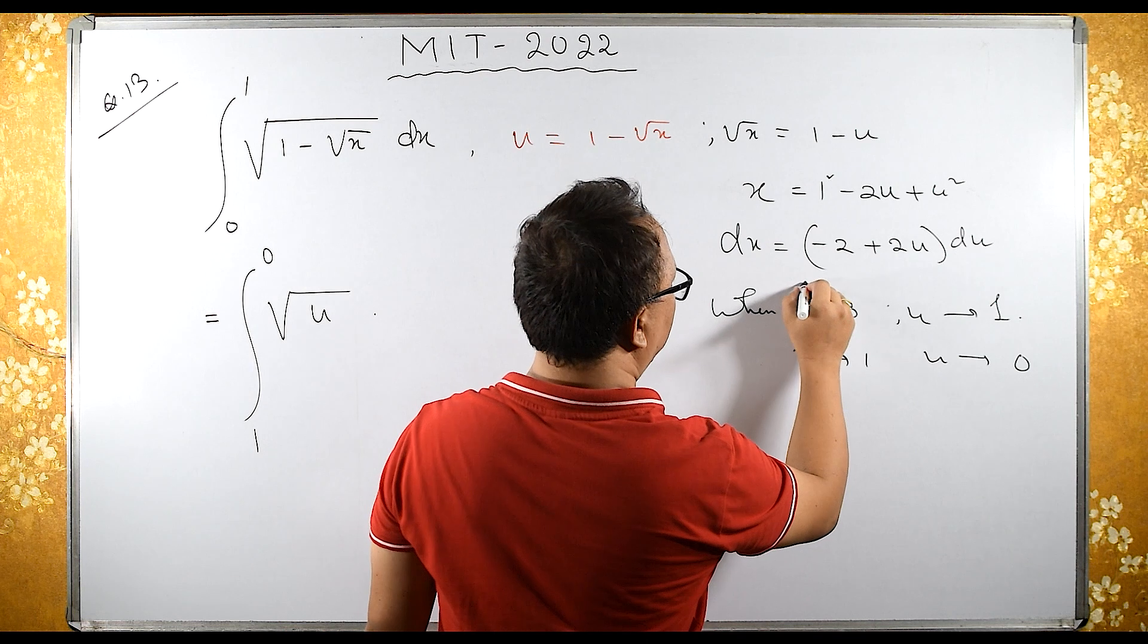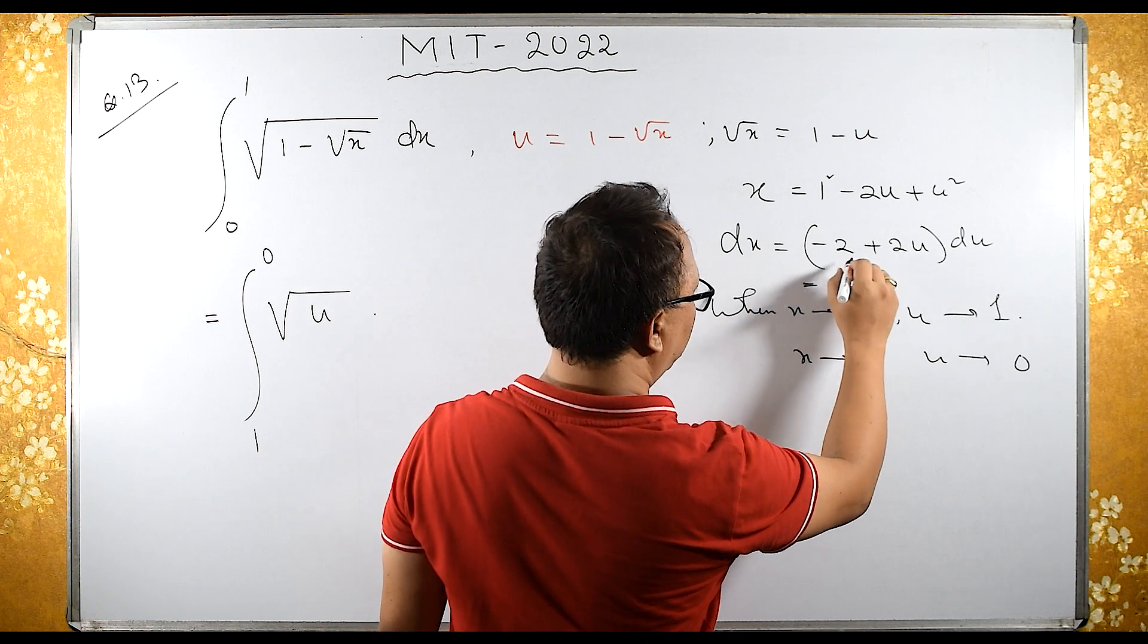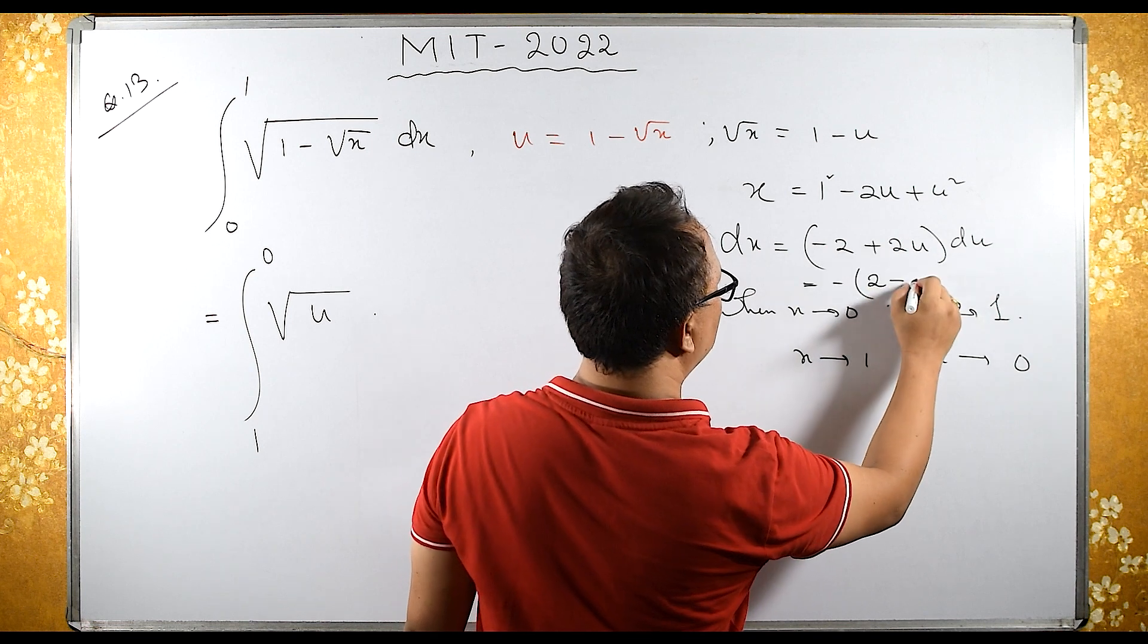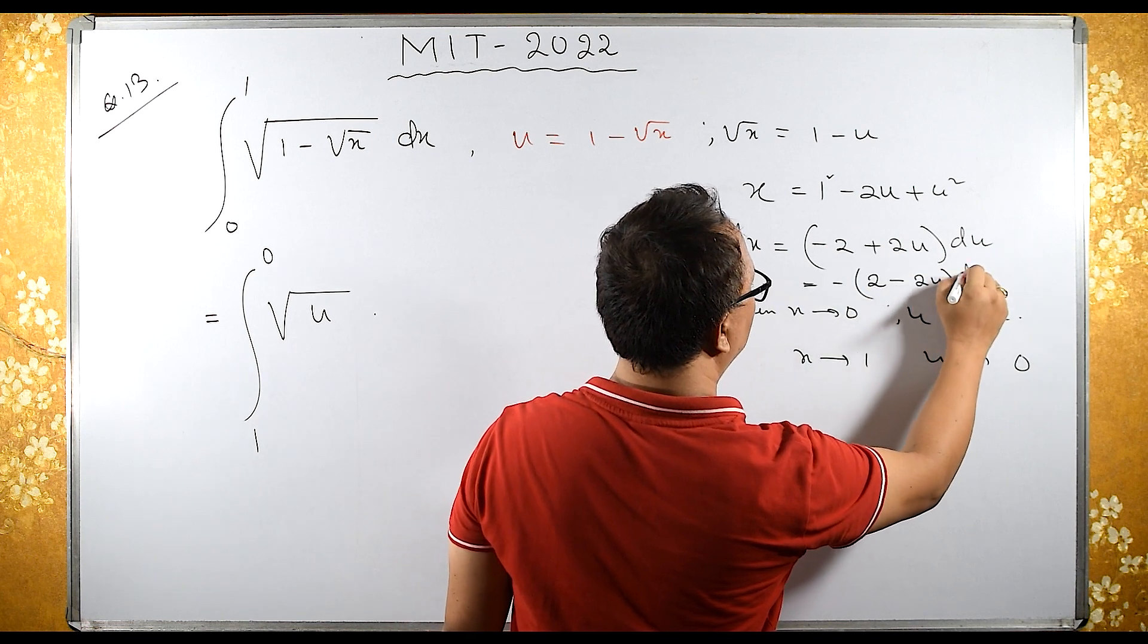Here I can take minus common. If I take minus common, then -2 becomes 2 and the expression becomes (2 - 2u) du.